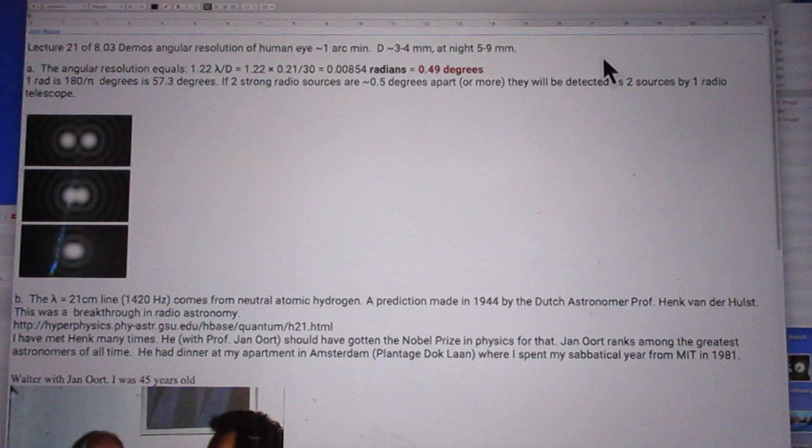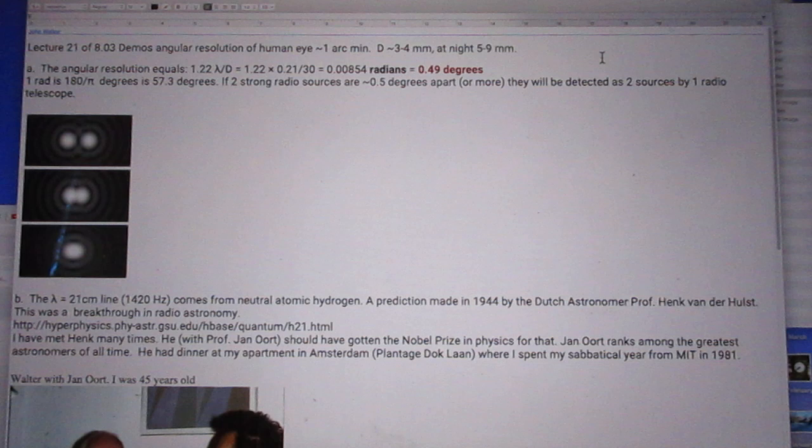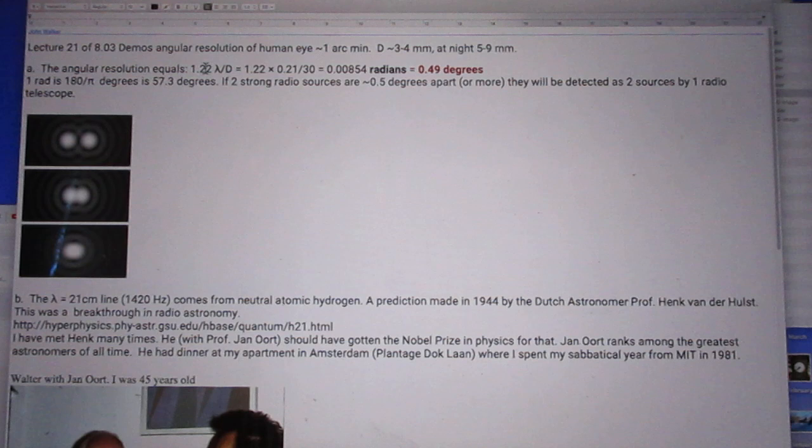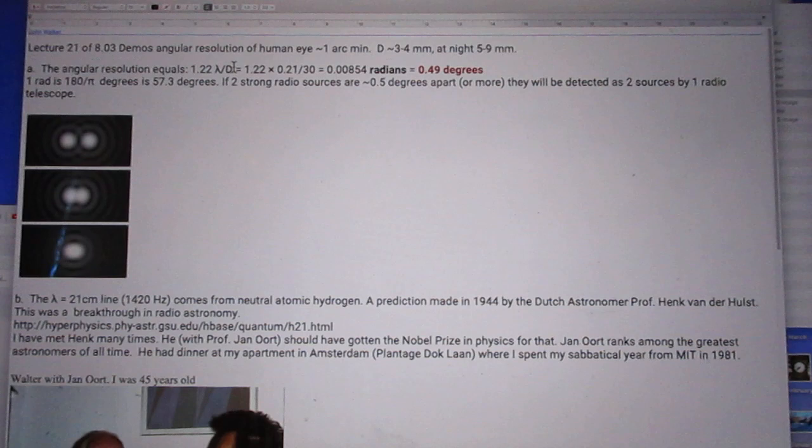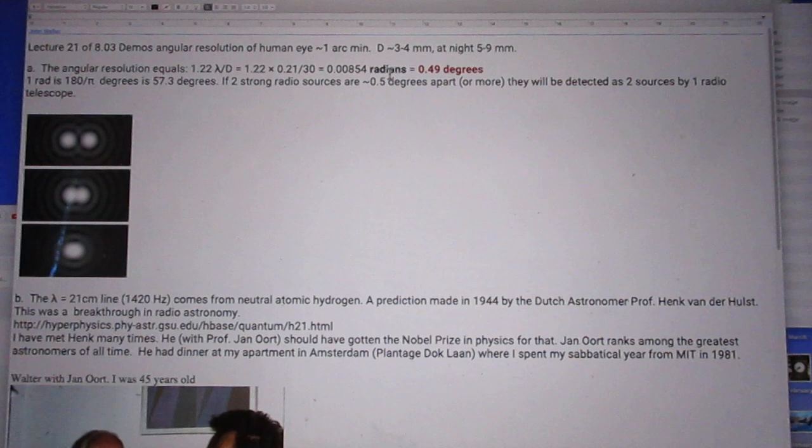Now the first question. If one of these radio telescopes looks at the sky, what would be the angular resolution? Look at my lecture 21. And the answer is 1.22 times lambda over D. Lambda is 21 centimeters, which is 0.21 meters. D was 100 feet, which is about 30 meters. So there is so many radians.